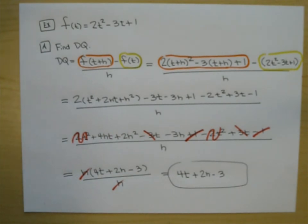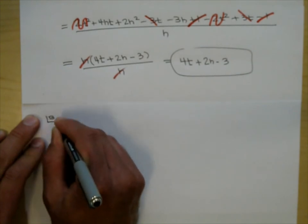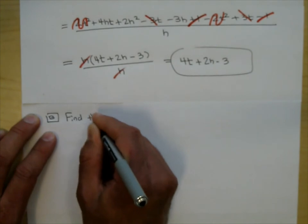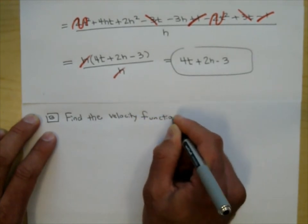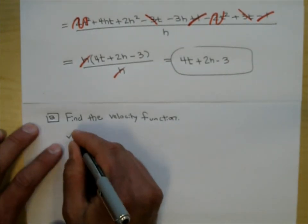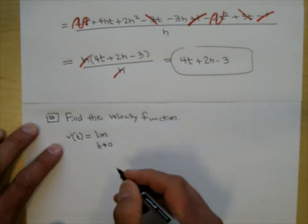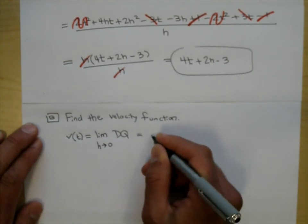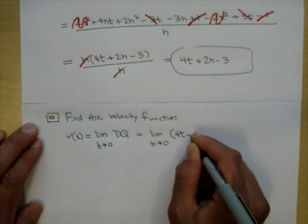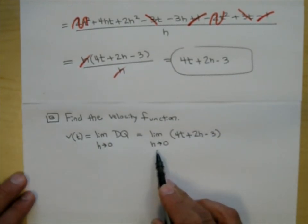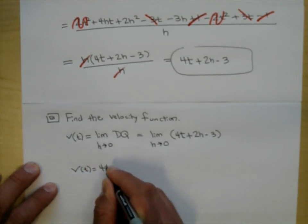Part B: find the velocity function, another word for the derivative. The derivative is the limit as H approaches 0 of DQ, which is 4T plus 2H minus 3. Plugging in 0 for H, the velocity function becomes just 4T minus 3.